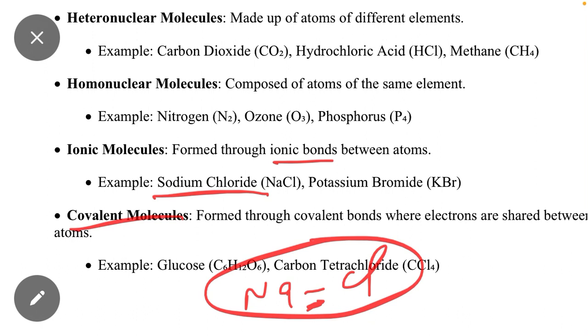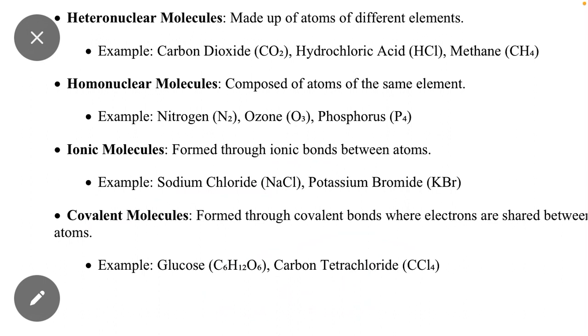Similarly, covalent molecules: if the bond present between two atoms is a covalent bond, then that molecule will be a covalent molecule. For example, CCl₄ (carbon tetrachloride)—this bond is a covalent bond. That is why this molecule will be a covalent molecule.